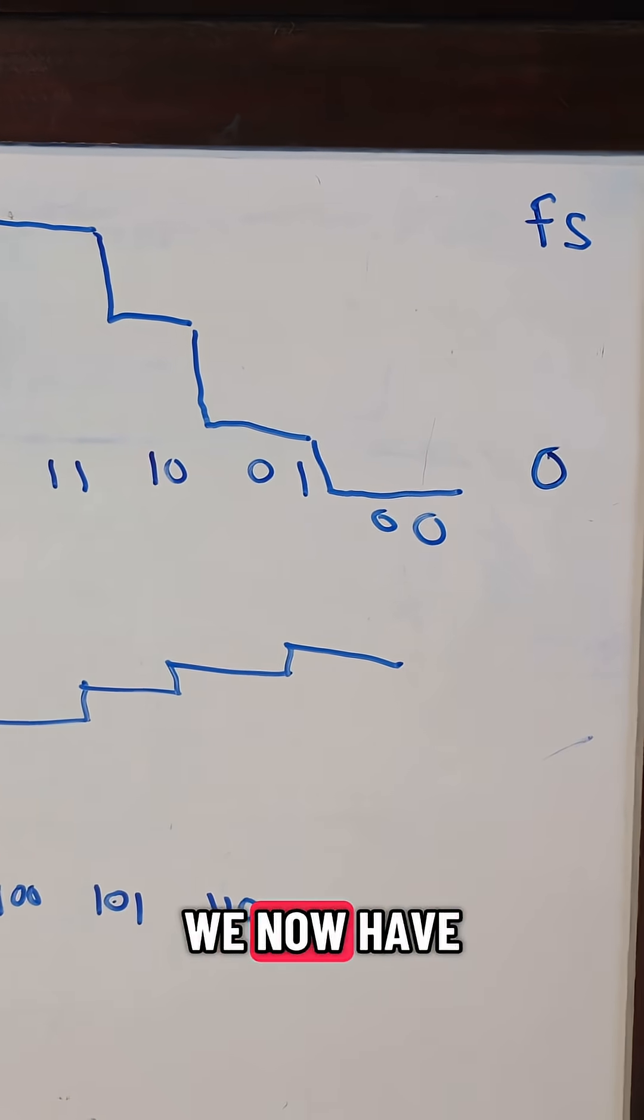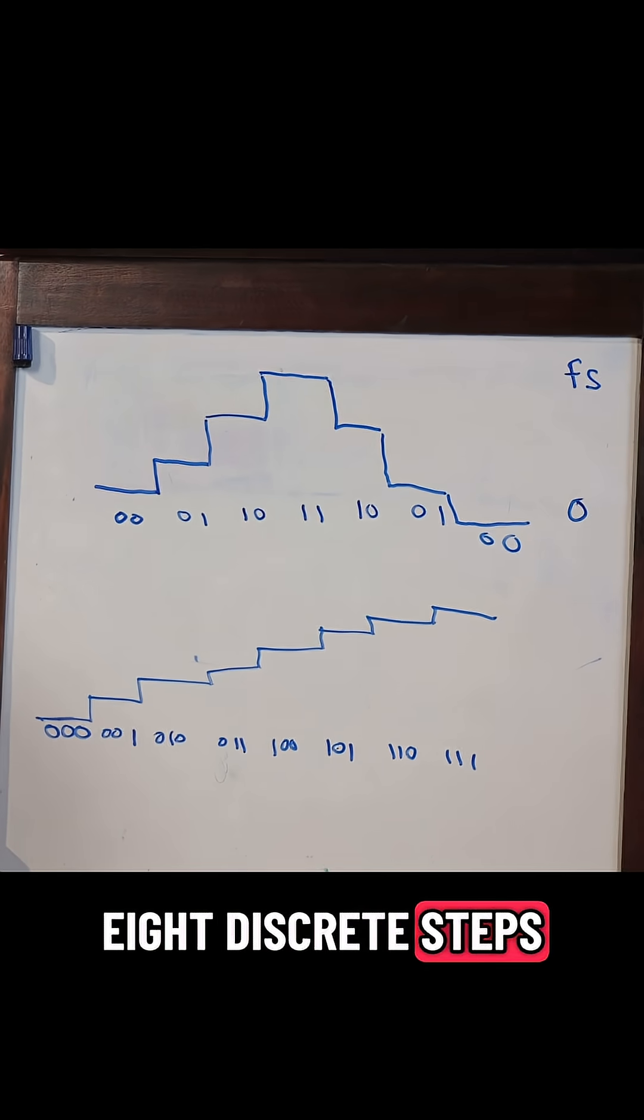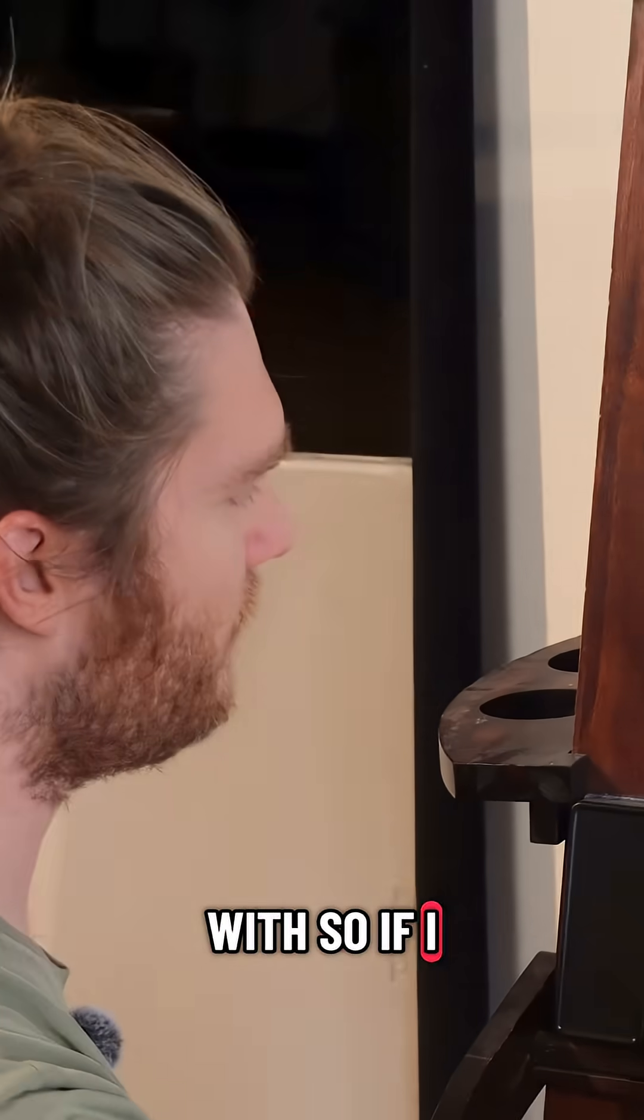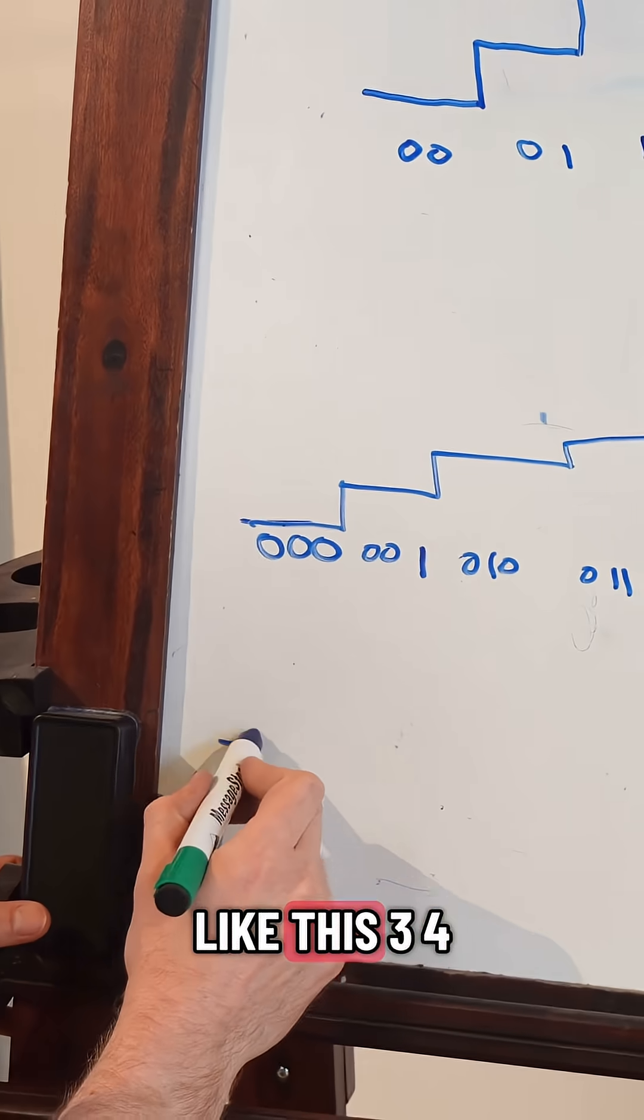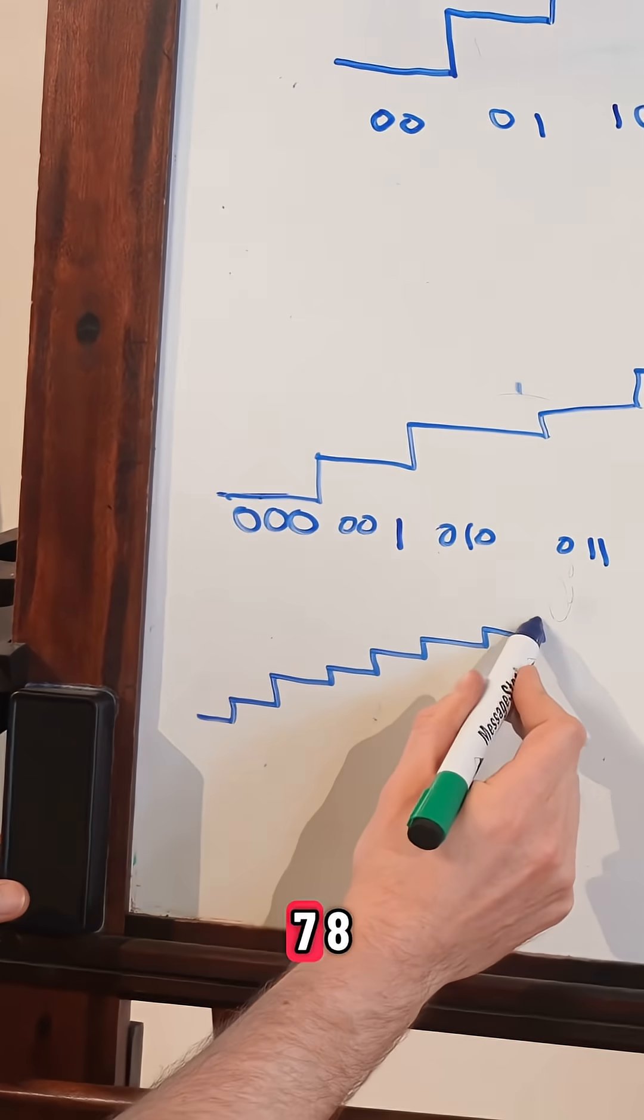So we now have eight discrete steps that we could build an audio wave with. So if I draw it down here, for example, just to show you what a sine wave would look like, it would be like this. Three, four, five, six, seven, eight.